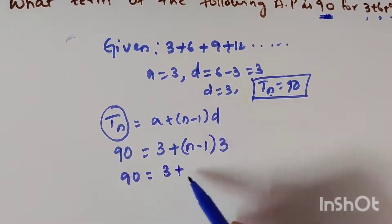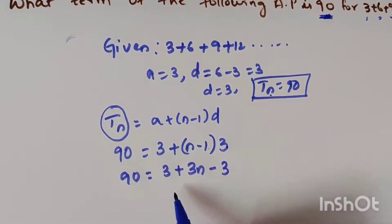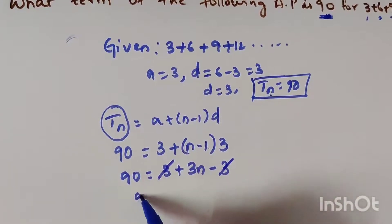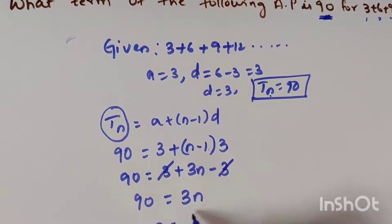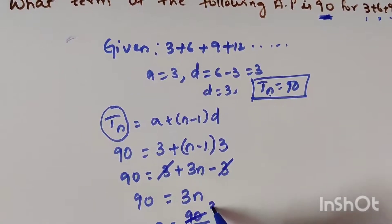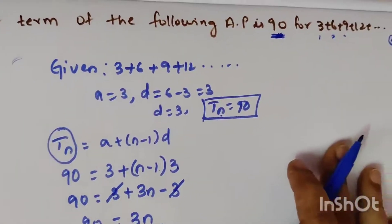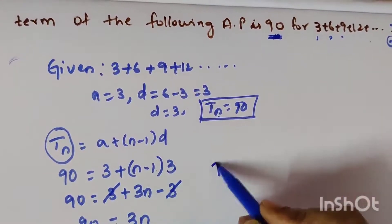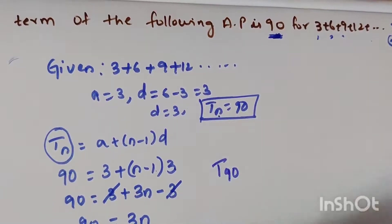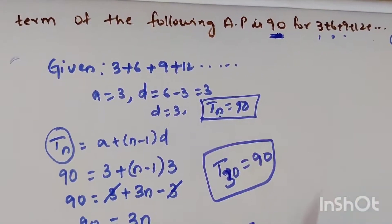Solving: 90 = 3 + 3(n−1) = 3 + 3n − 3, so 90 = 3n, which gives n = 30. That means at the 30th term of this sequence, you get the value 90. So T(30) = 90.